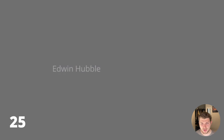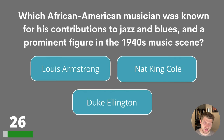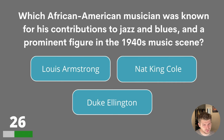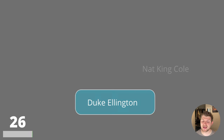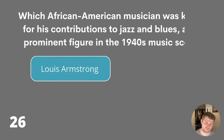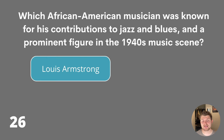Halfway through this quiz — question twenty-six. Which African-American musician was known for his contributions to jazz and blues and was a prominent figure in the 1940s music scene? Louis Armstrong, Nat King Cole or Duke Ellington? The answer is Louis Armstrong.